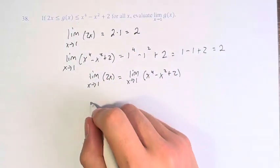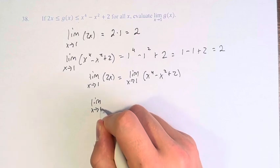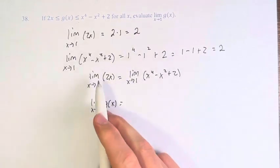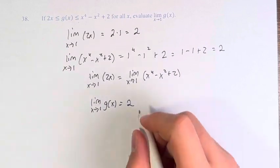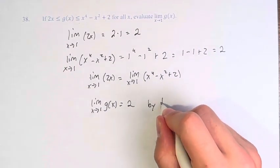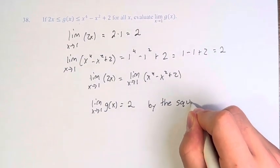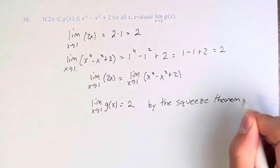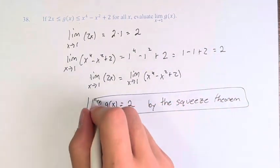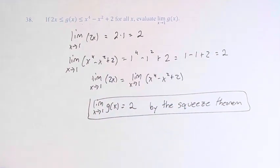We know that the limit as x approaches 1 of g(x) is equal to these limits as x approaches 1, and therefore it's equal to 2. We can say this by the squeeze theorem.